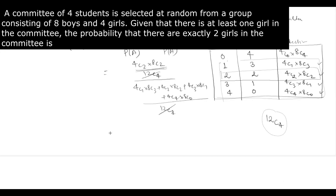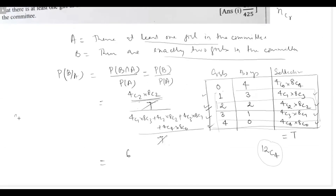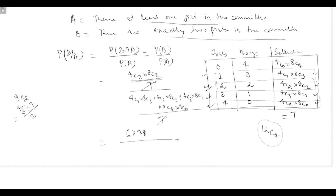Now calculating: 4C2 = 6. 8C2 = 8×7/2 = 28. So the numerator is 6×28. For P(A): 4C1 = 4, 8C3 = 8×7×6/(3×2×1) = 56, giving 4×56. Plus 6×28. Then 4C3 = 4, 8C1 = 8, giving 4×8. Then 4C4 = 1 and 8C0 = 1.